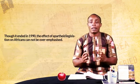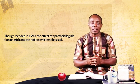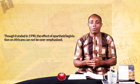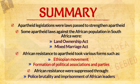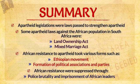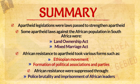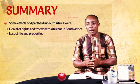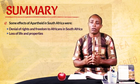Though apartheid policy was abolished in South Africa in the year 1990, its effects cannot be overemphasized. In this lesson, we learned that apartheid legislations were laws passed to strengthen apartheid; that some apartheid laws against the African population were the Land Ownership Act, Mixed Marriage Act, and others; that African resistance took various forms such as the Ethiopian movement and formation of political associations and parties; that African resistance was suppressed through police brutality and imprisonment of African leaders; and that the effects of apartheid included denial of rights and freedom and loss of lives and properties.